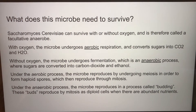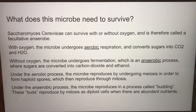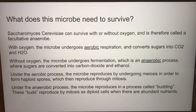Saccharomyces cerevisiae can survive with or without oxygen and is therefore called a facultative anaerobe. With oxygen, the microbe undergoes aerobic respiration and converts sugars into CO2 and H2O. Without oxygen, the microbe undergoes fermentation — an anaerobic process where sugars are converted into carbon dioxide and ethanol. Under the aerobic process, the microbe reproduces by undergoing meiosis to form haploid spores, which then reproduce through mitosis. Under the anaerobic process, the microbe reproduces through budding, where buds reproduce by mitosis as diploid cells when there are abundant nutrients.